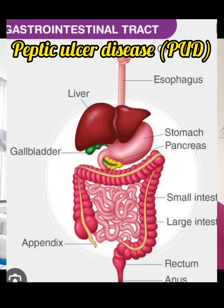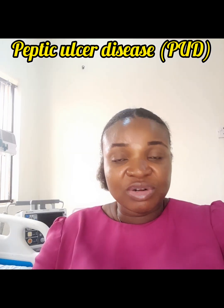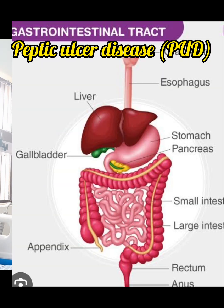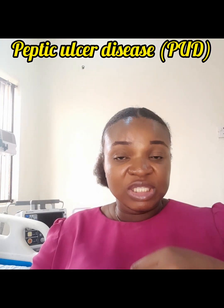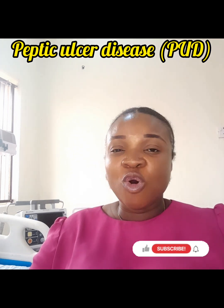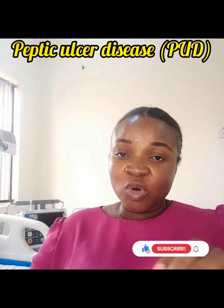The gastrointestinal tract starts from the mouth. When you swallow food it enters your oesophagus — look at the picture above. From your oesophagus it enters your stomach, from your stomach it enters the small intestine, and from the small intestine it enters the large intestine, then to the rectum, and you pass it through the anus as feces.